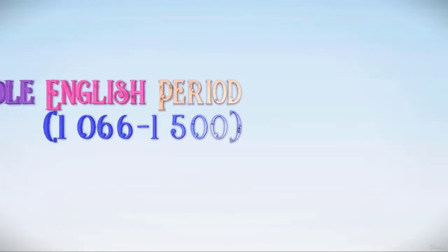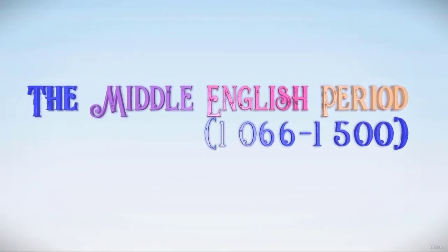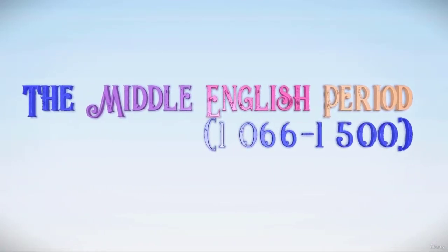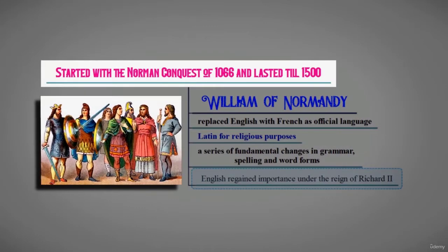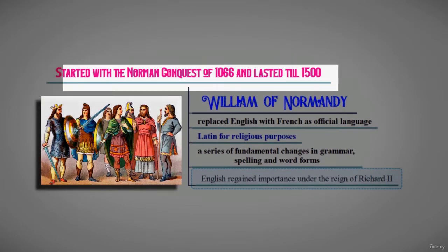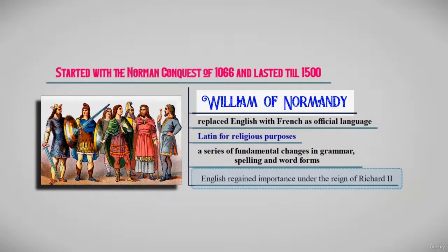The Middle English period started with the Norman Conquest of 1066 and lasted roughly till the year 1500. The Norman Conquest established the rule of William of Normandy in England.